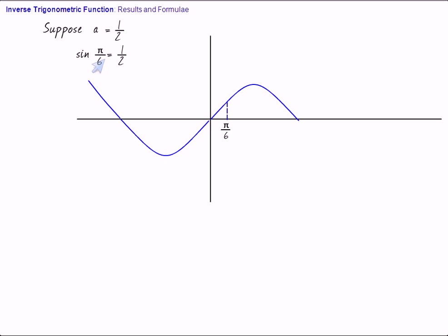Role of a is being played by half. Now, there are other values also whose sine is half. This is the value 5 pi by 6. Then here there is a value. Then here there is a value.